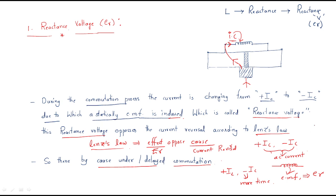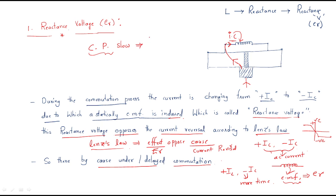Generally, any coil changing from plus IC to minus IC — that means it has positive magnitude as well as negative magnitude across one coil — automatically a statically induced EMF is produced. Due to Lenz's law, this EMF opposes the current reversal, so the commutation process becomes slow. Due to that we get delayed commutation.